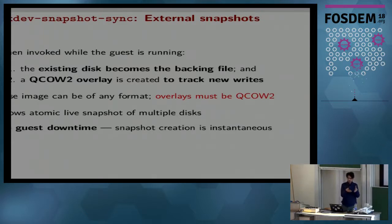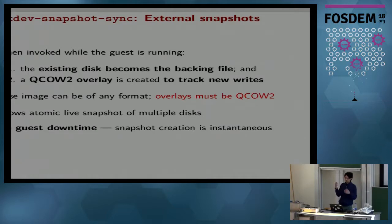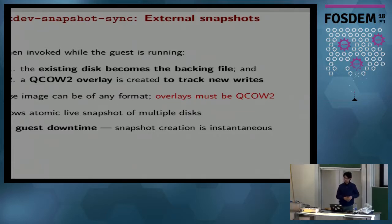Overlays have to be QCOW2 format; basically the backing can be LVM, raw, block device, or any other format. The appealing aspect is that there's no guest downtime — the snapshot is instantaneous. Some of you may have used QEMU's internal snapshots, which are more convenient because the snapshot and the delta are both in a single file, making them nice to copy around. But internal snapshots are not the most well-tested code path, and upstream concentrates more on external snapshots. There's also a brief guest pause involved with internal snapshots, which may not be acceptable for some use cases.